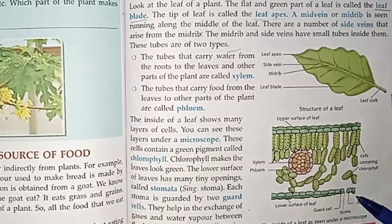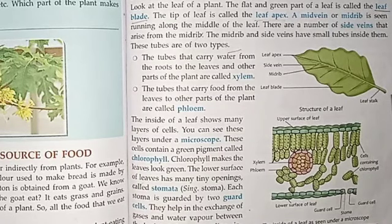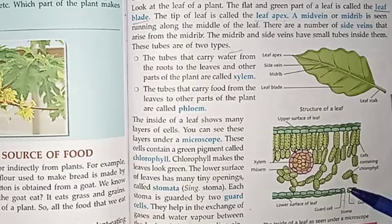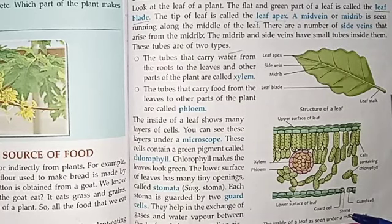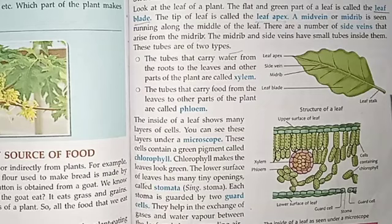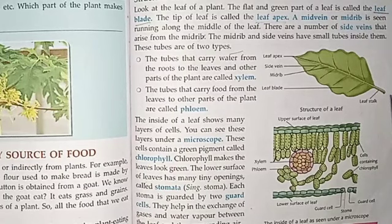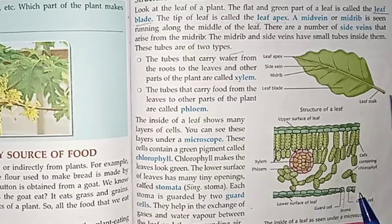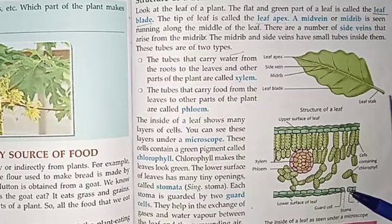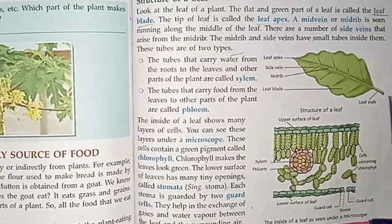The lower surface of the leaf has many tiny openings. This lower surface has small openings. Each opening is called a stoma — the word stoma means stomach, and the plural form is stomata.